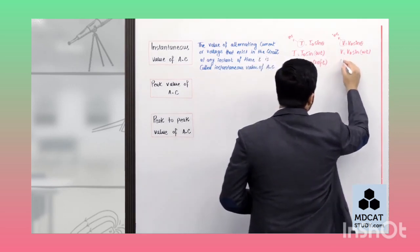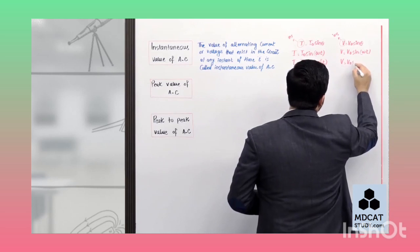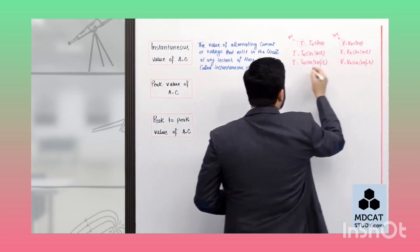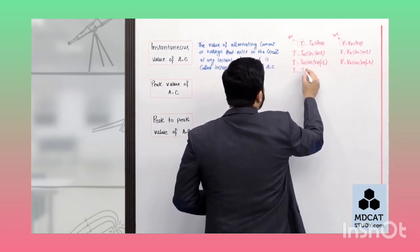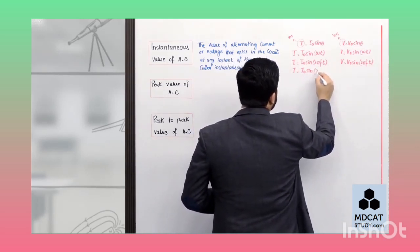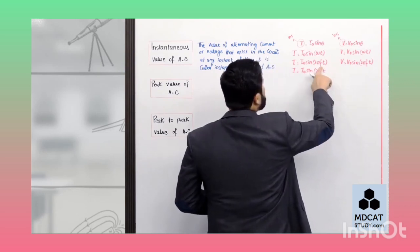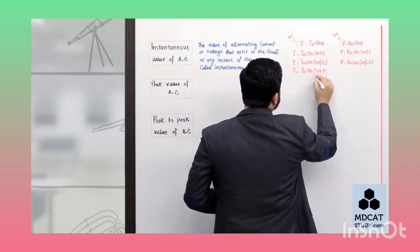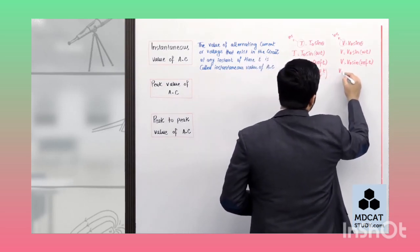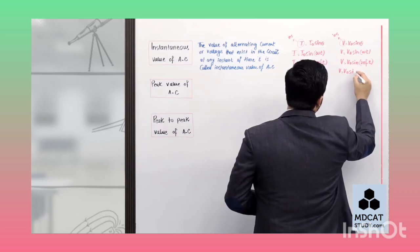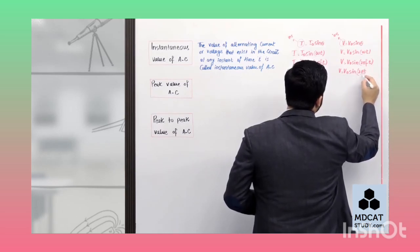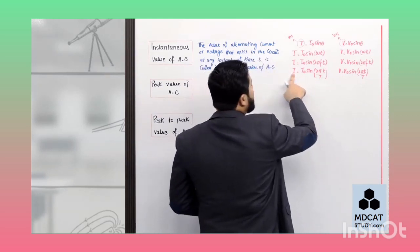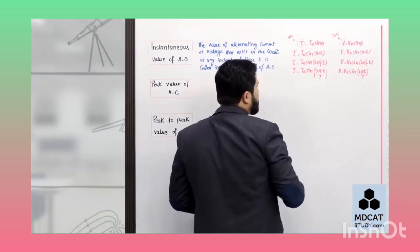اس formula کی extensions ہیں: چونکہ θ = ωt ہوتا ہے، تو i = i₀ sin(ωt) لکھ سکتے ہیں۔ اور چونکہ ω = 2πf ہوتا ہے، تو i = i₀ sin(2πft) بھی لکھ سکتے ہیں۔ اسی طرح frequency کو 1/T لکھ سکتے ہیں۔ تو students آپ نے دیکھا کہ ہم different طریقوں سے instantaneous value of current اور voltage find out کر سکتے ہیں۔